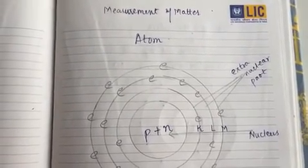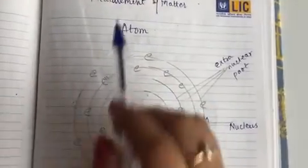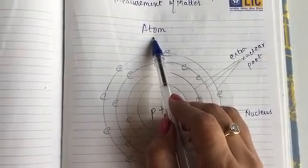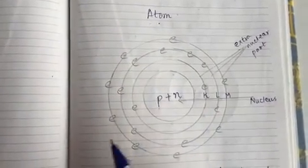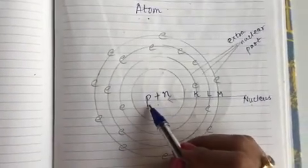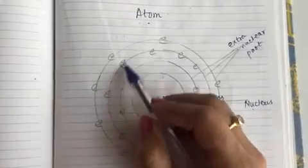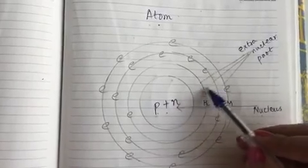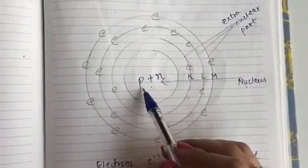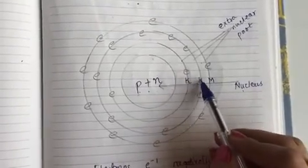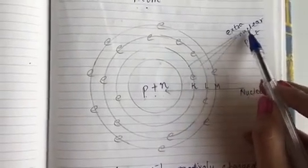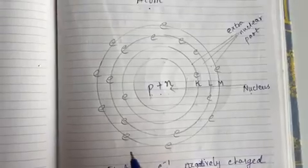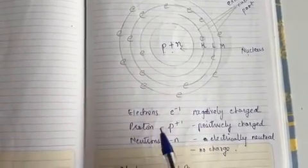Let us start with the chapter 'Structure of Matter.' Before starting, we will have a quick recap of what we studied in 8th standard. An atom has a nucleus which has protons and neutrons, and has an extra nuclear part around this nucleus. The atom has various orbits together known as the extra nuclear part, in which there are electrons revolving.